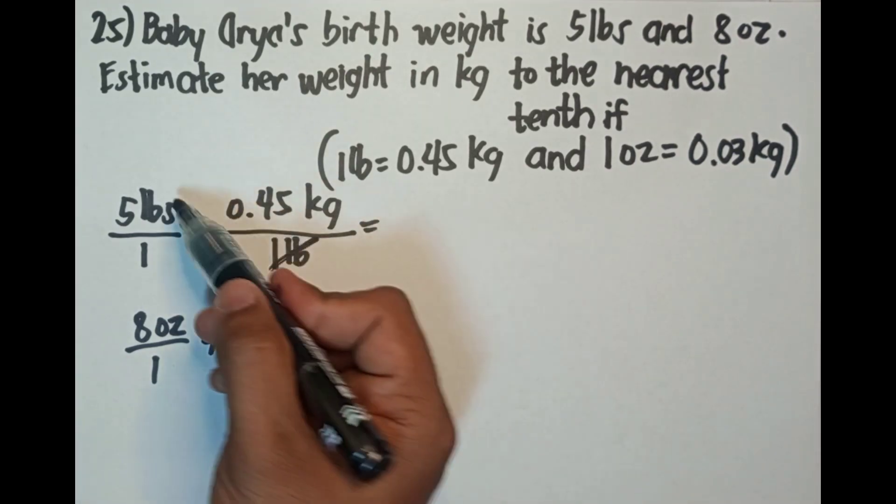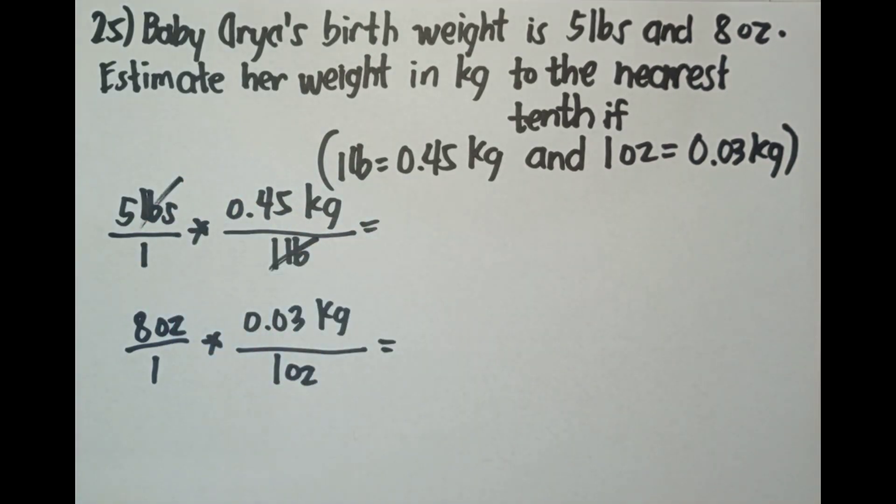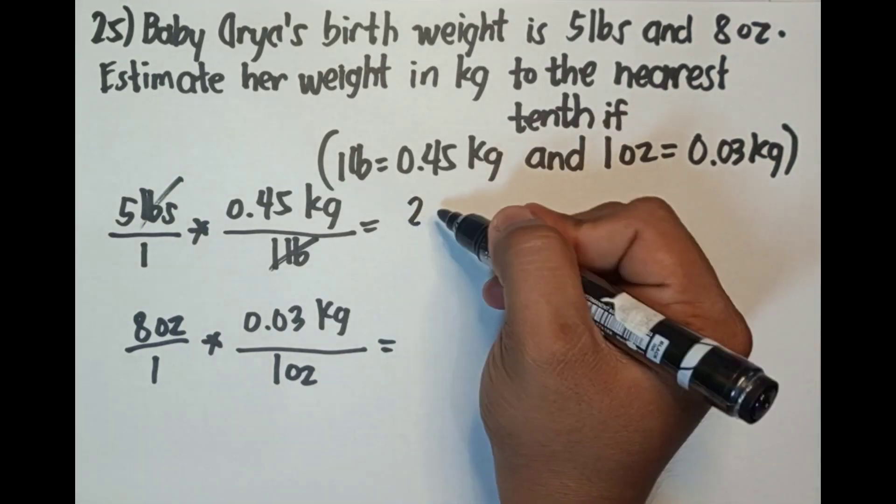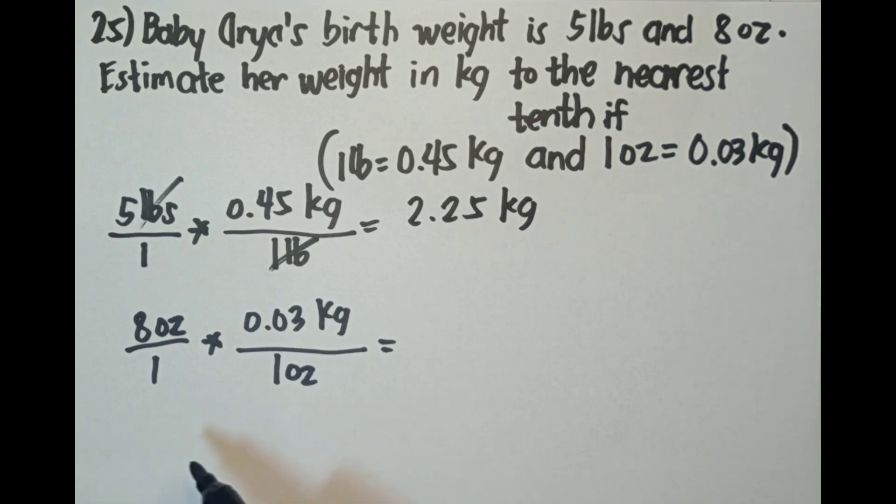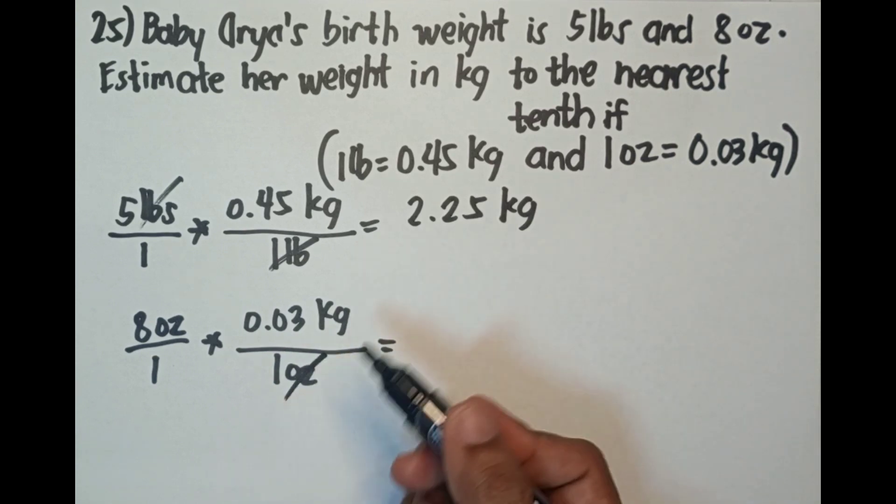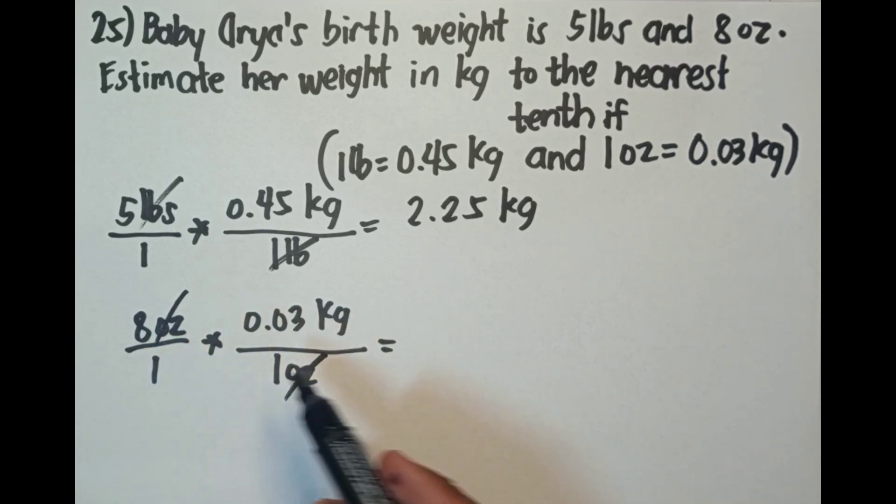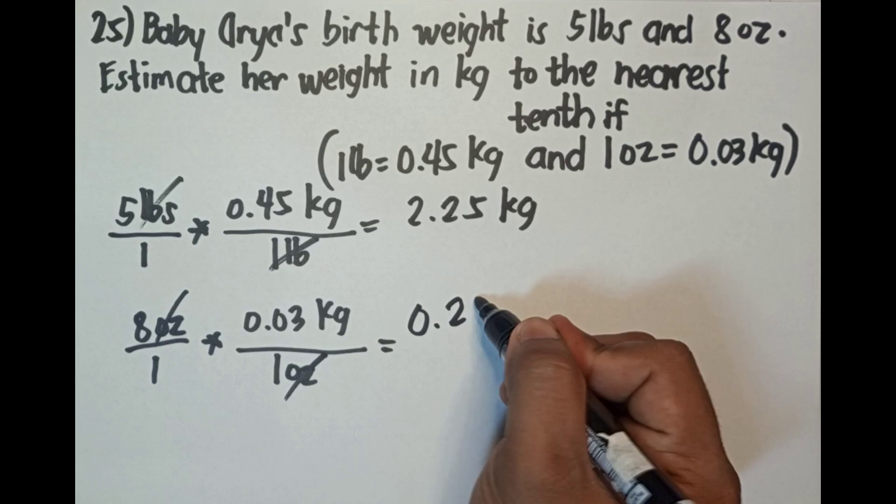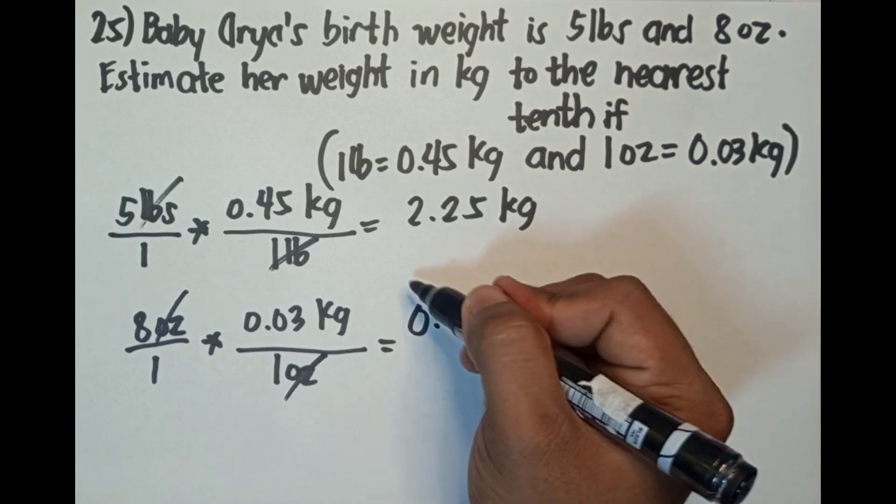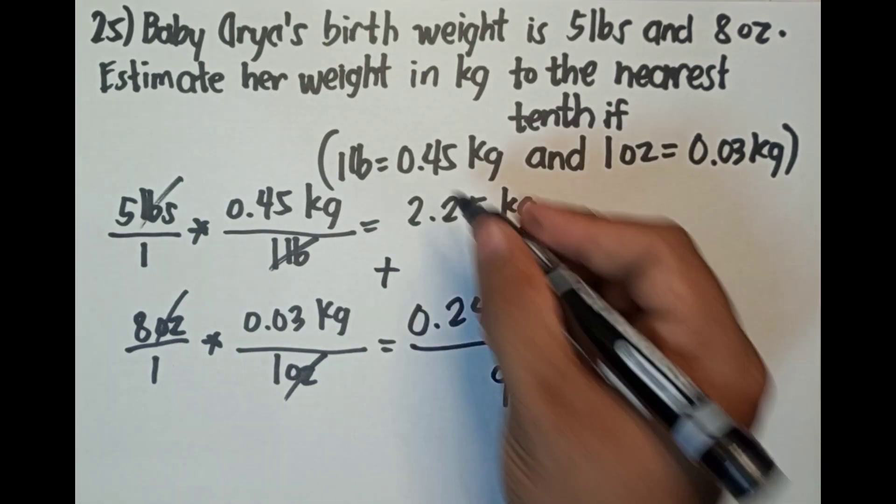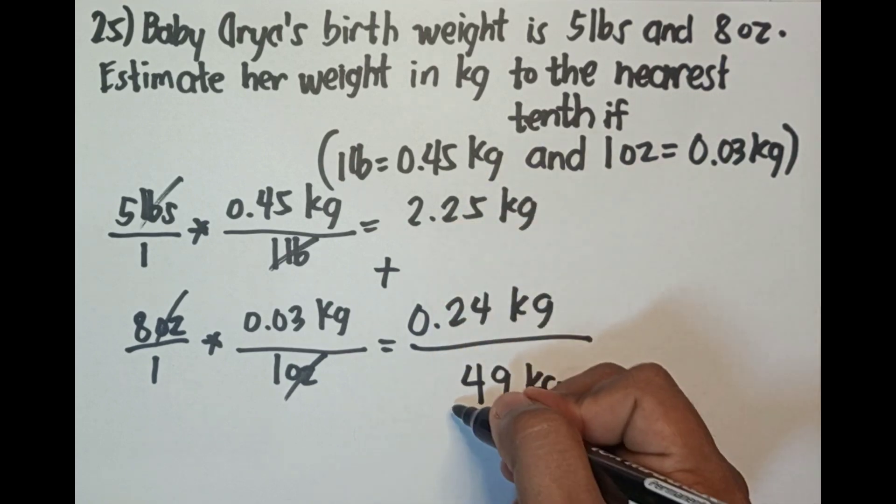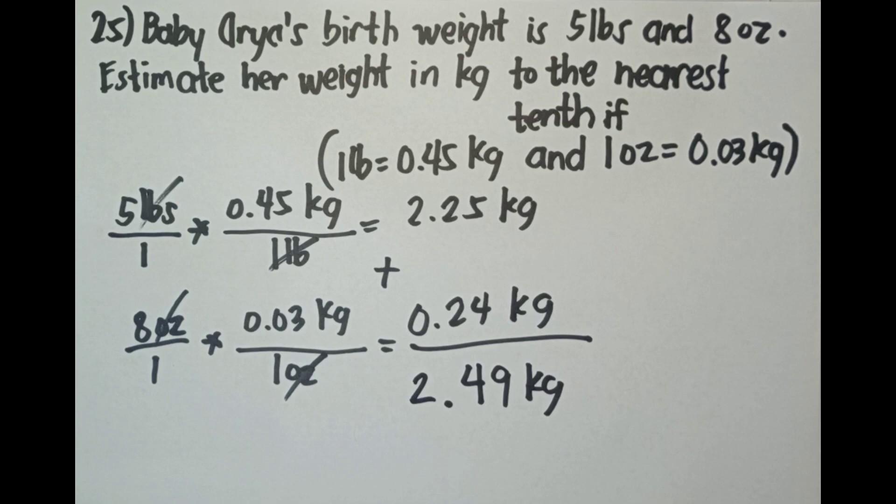Yung pound, maka-cancel na yung unit niya na pound. Ang matitira na lang, 5 times 0.45 kilograms. The answer is 2.25 kilograms. How about this one? 8 ounce over 1 times 0.03 kilograms over per 1 ounce. Cancel yung ounce. 8 times 0.03 is 0.24 kilograms. Ito ia-add natin guys. Kilogram, 5 plus 4 is 9, 2 plus 2 is 4. Point, 2 plus 0 is 2.